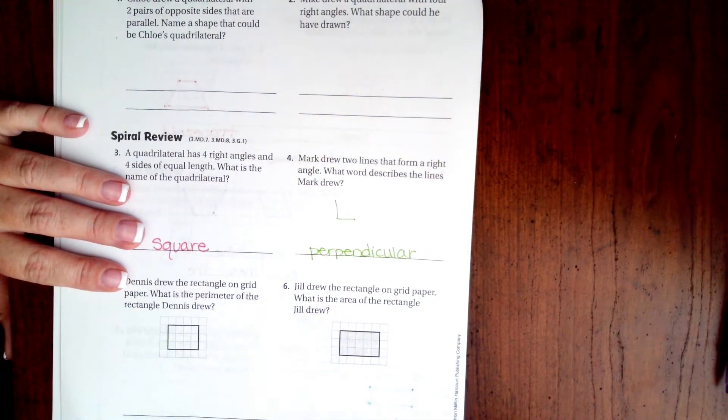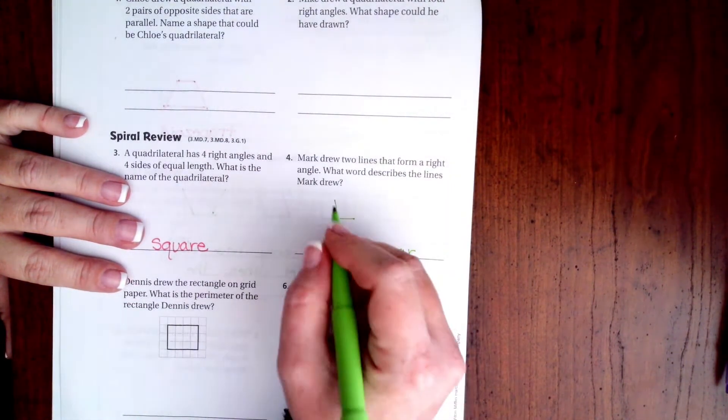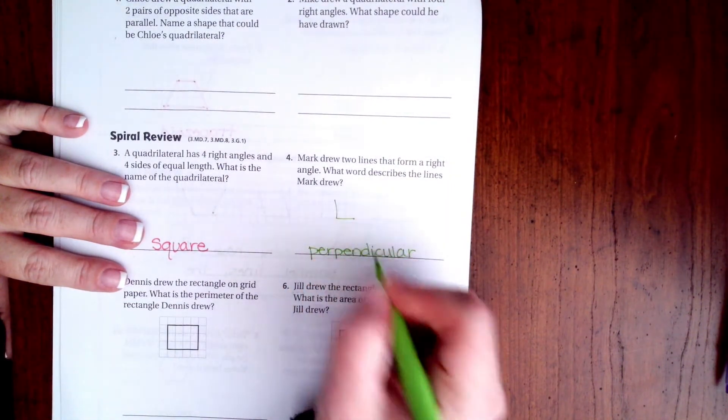We know from previous lessons that the lines that form that make an L, those are called perpendicular.